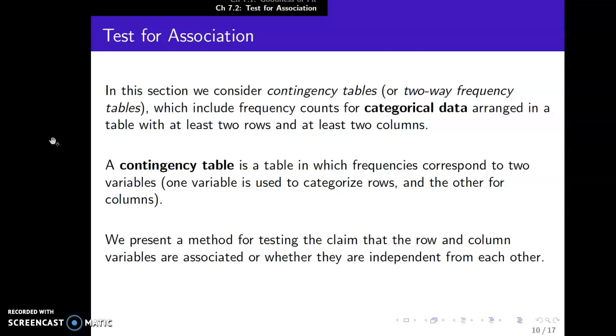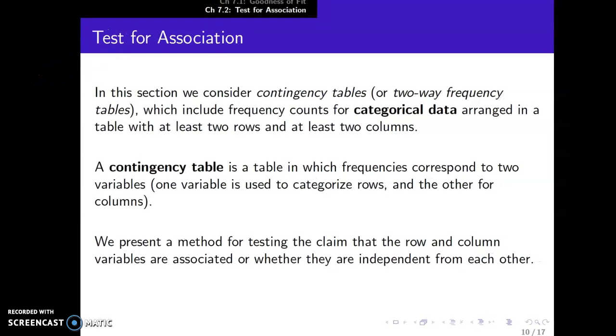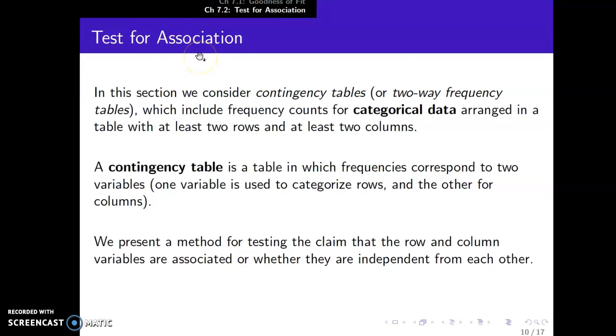Okay, so I want to talk about our second hypothesis test in Chapter 7. It's called the test for association. In this section we consider two-way tables, also called contingency tables, which include frequency counts for categorical data arranged in table. And we have to have at least two rows and two columns, and these do not count labels—two rows and two columns of data. So I want to think about one variable is used to categorize the rows, and the other variable is used for columns in a contingency or two-way table. And we're going to go through methods for testing the claim that the row and column variables are associated or whether they're independent from one another.